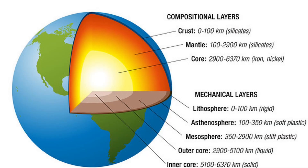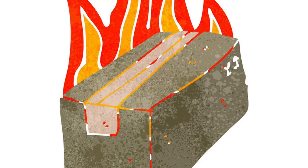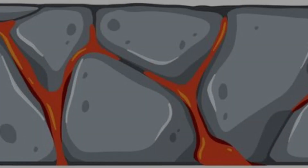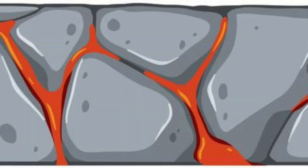Formation of Earth's layers: over time, it developed distinct layers. The core is primarily composed of iron and nickel. The mantle consists of solid rock. And the outermost layer is the crust, which is divided into tectonic plates.